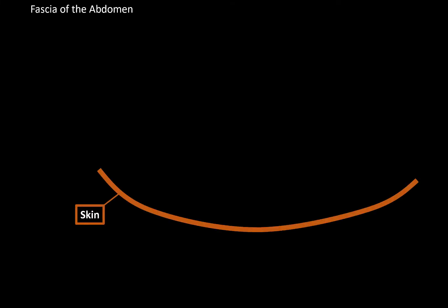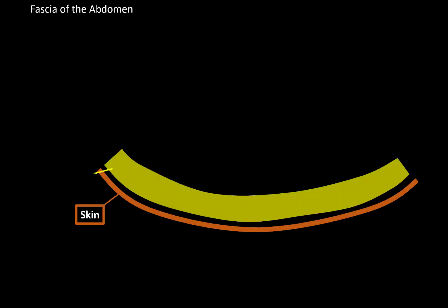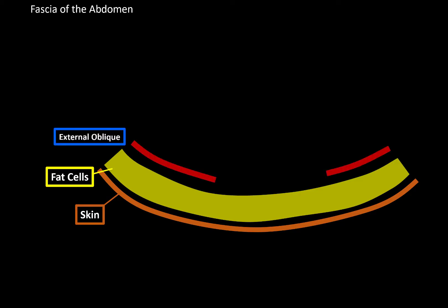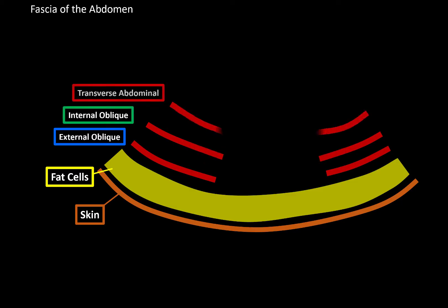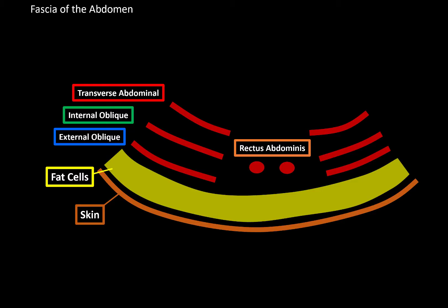First, we have the skin, and right underneath the skin layers we will find the adipose tissue, or fat cells. Underneath the fat cells, we can find the external oblique, internal oblique, and the transverse abdominal muscle. And in the middle here, we can see the rectus abdominis muscle. So this is a very schematic outline of the abdominal muscles.